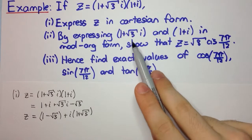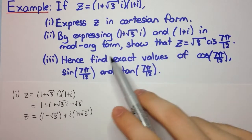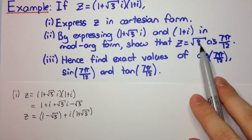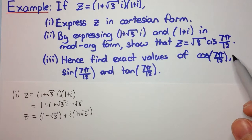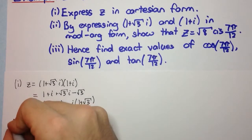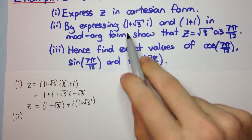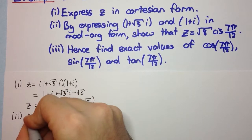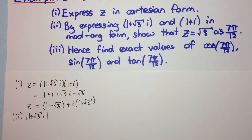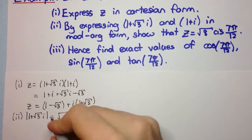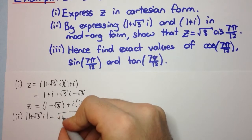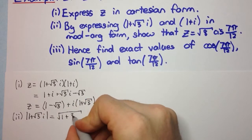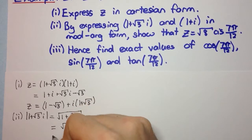The next part: by expressing (1 + √3i) and (1 + i) in mod-arg form, show that z equals √8 cis(7π/12). For mod-arg form we need the modulus and the argument. The modulus of (1 + √3i) is the square root of 1 squared plus (√3) squared, which is √4, equal to 2.